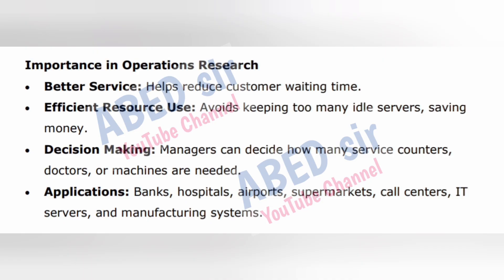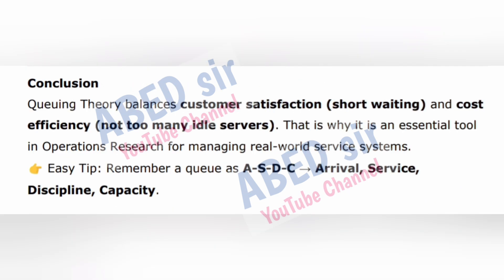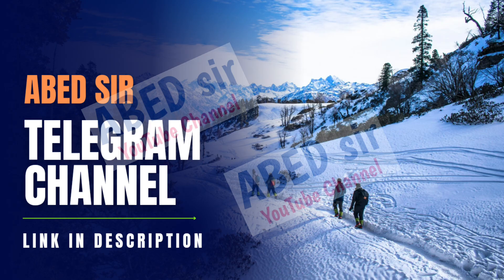Applications: banks, hospitals, airports, supermarkets, call centers, IT servers, and manufacturing systems. Conclusion: Queuing theory balances customer satisfaction (short waiting) and cost efficiency (not too many idle servers). That is why it is an essential tool in operations research for managing real-world service systems. Easy tip: Remember a queue as ASDC — Arrival, Service, Discipline, Capacity.